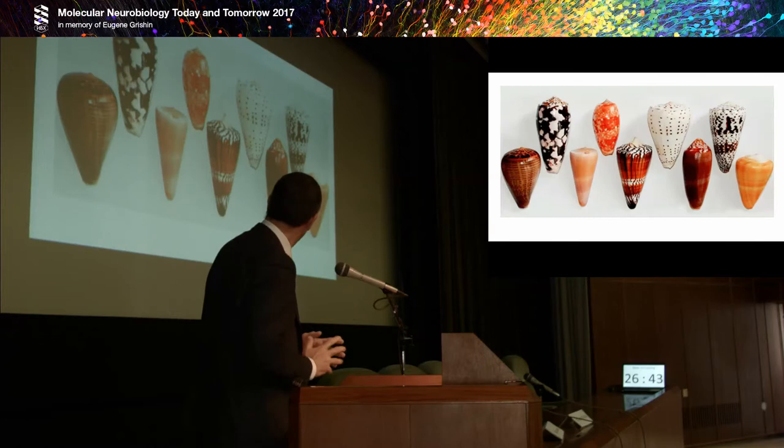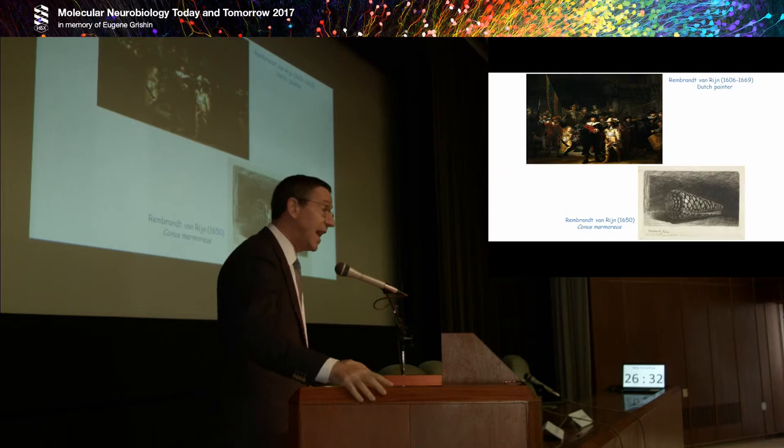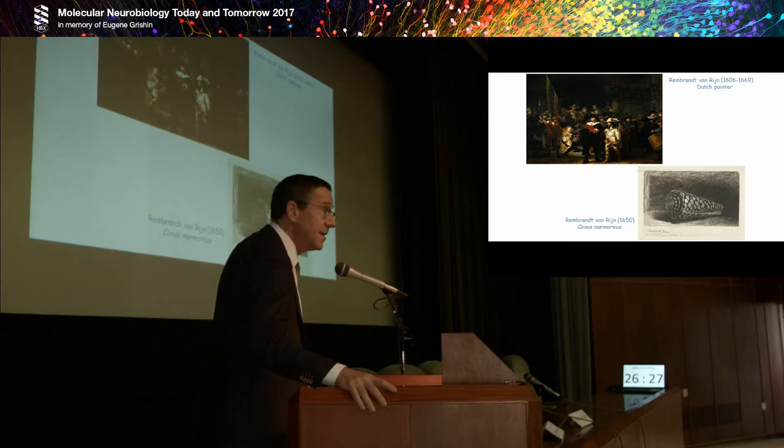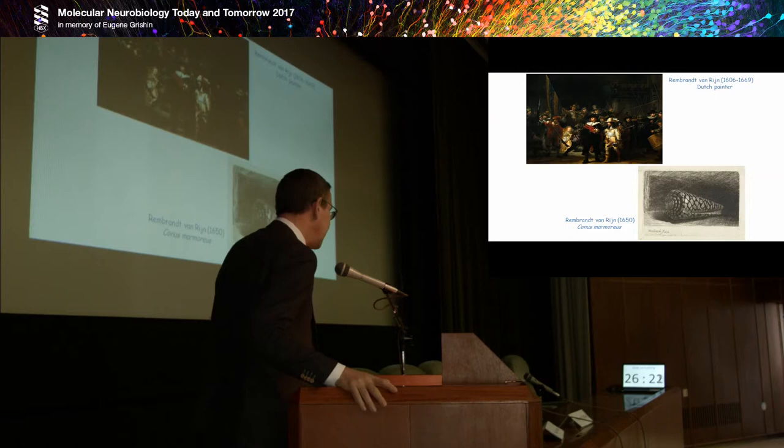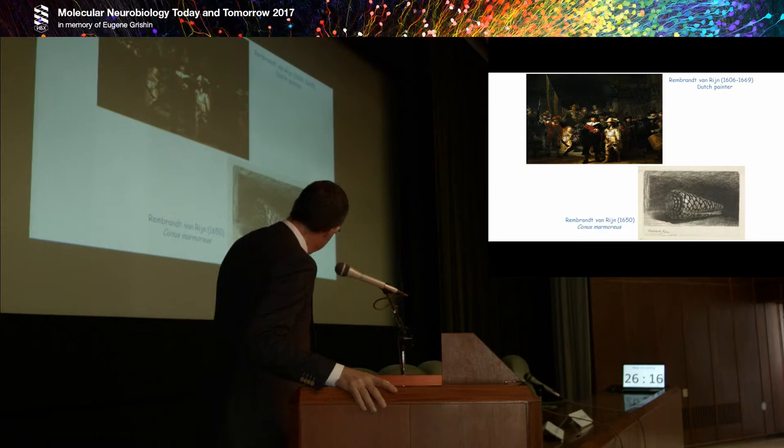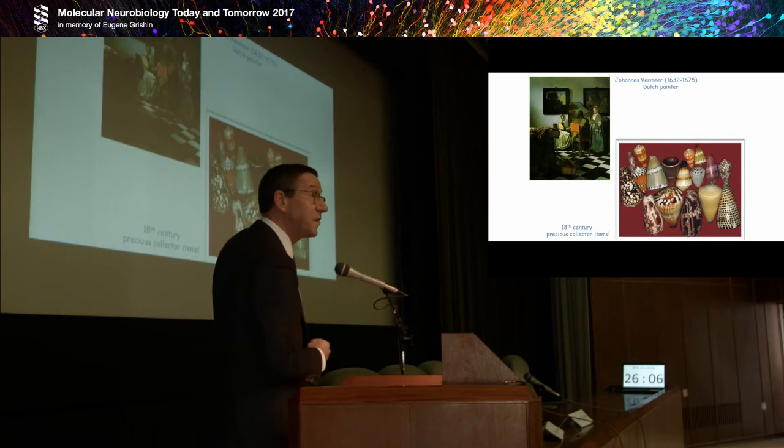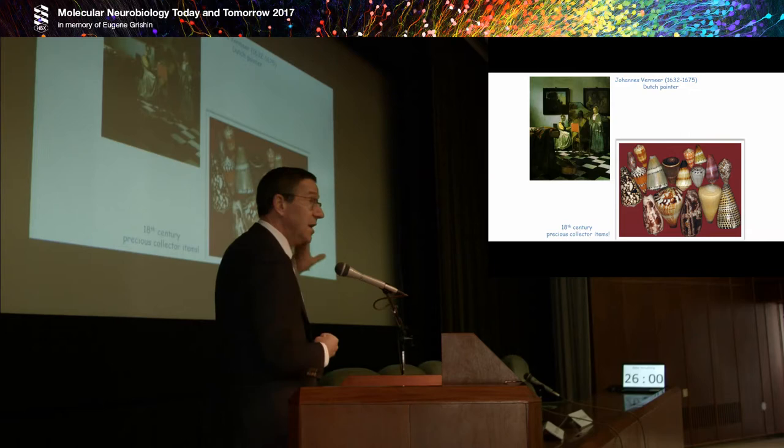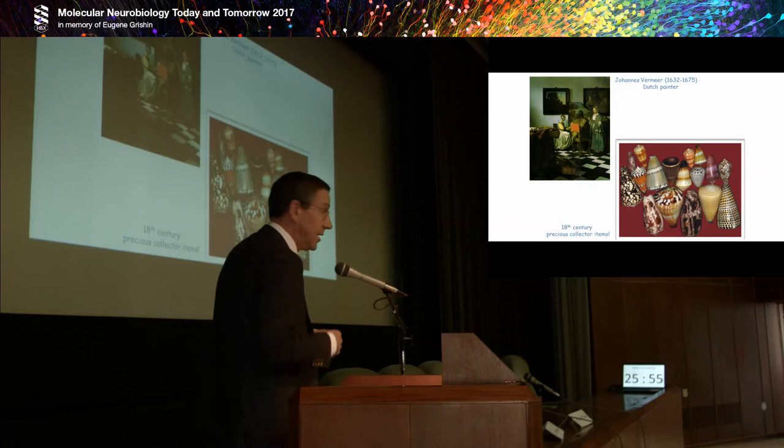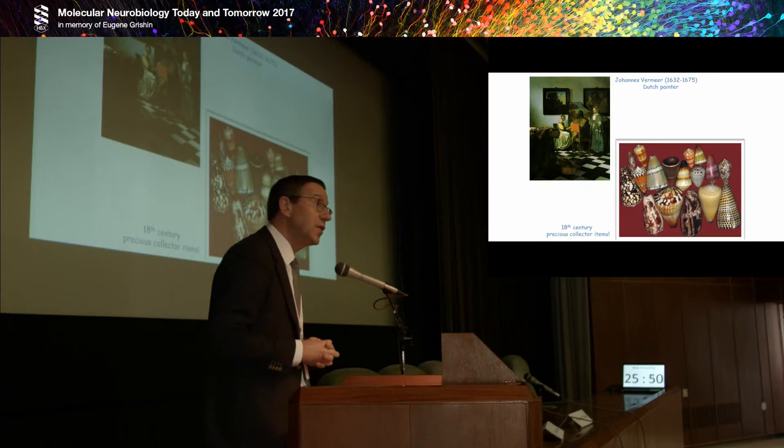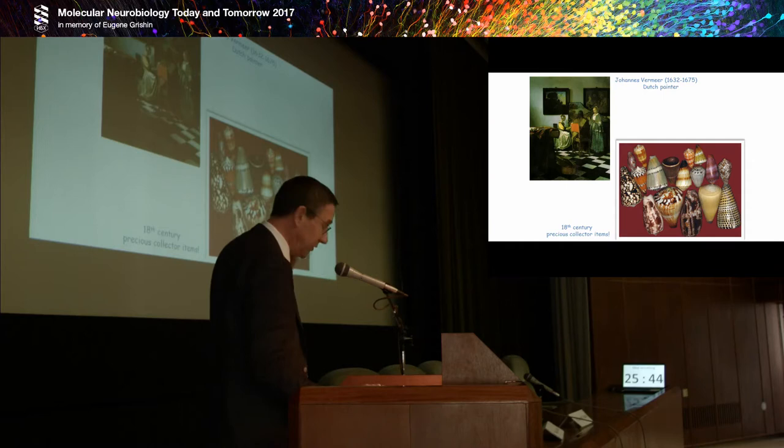Coming to neurobiology and cones, we all know the beautiful cone shells that are collector items. They have been around since some time. Back in the 1600s, the famous painter Rembrandt van Rijn painted the famous Nachtwacht painting, but he also painted a Conus Marmoreus in 1650. There was an interest in these animals. At that time it was more valuable to collect these cones from the Far East than to be the proud owner of a painting by Vermeer. Nowadays it's quite the opposite.